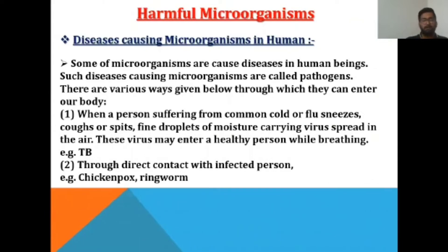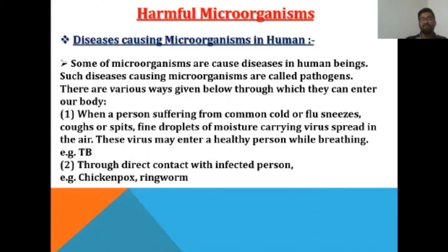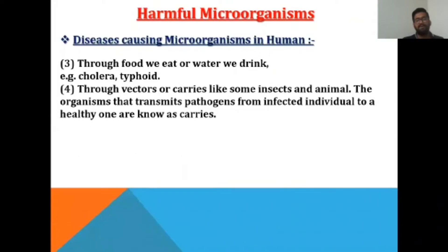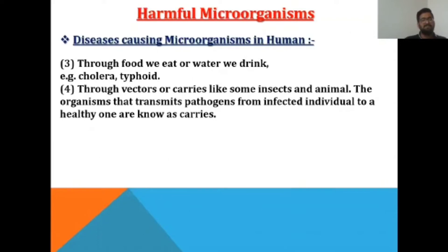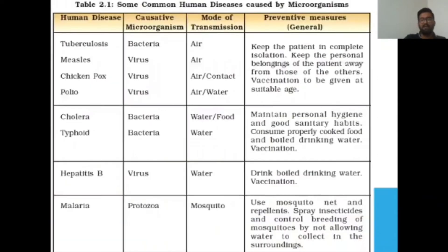Fine droplets of moisture carrying viruses spread in the air and may enter a healthy person while breathing. The second way is through direct contact with an infected person. The third way is through food we eat or water we drink, or through vectors or carriers. Organisms that transmit pathogens from an infected individual to a healthy one are known as carriers.